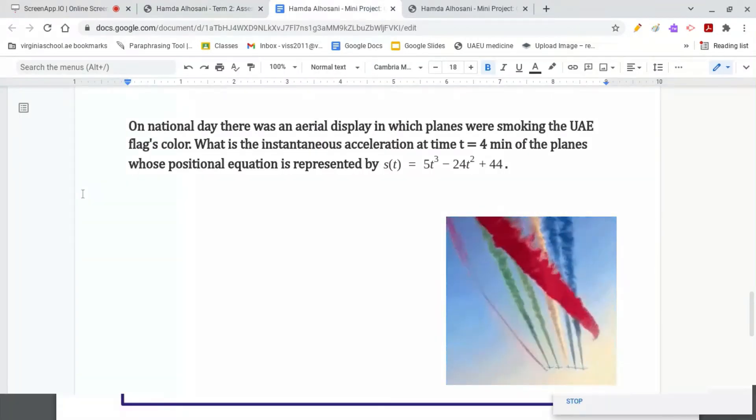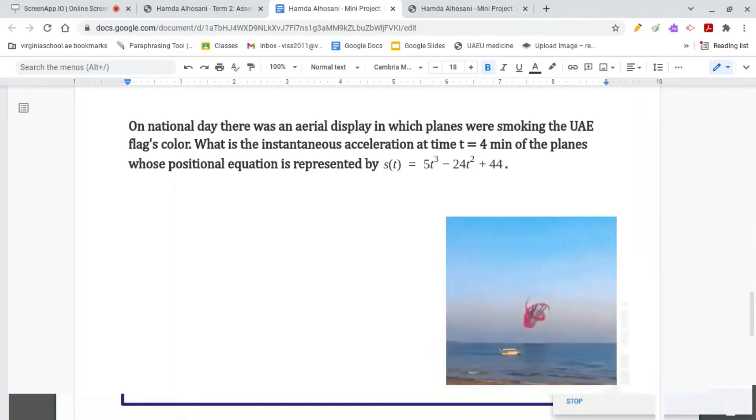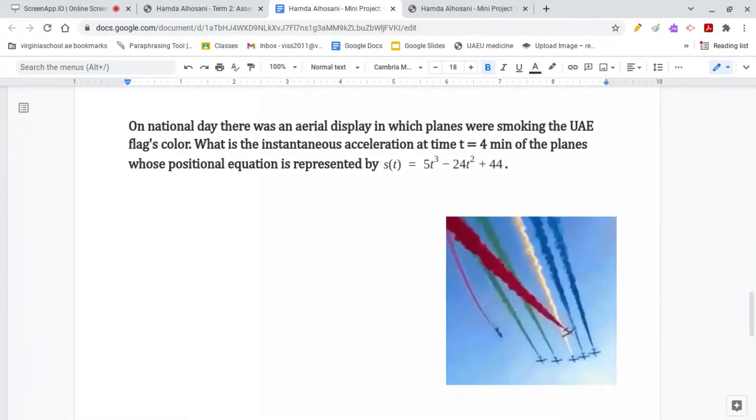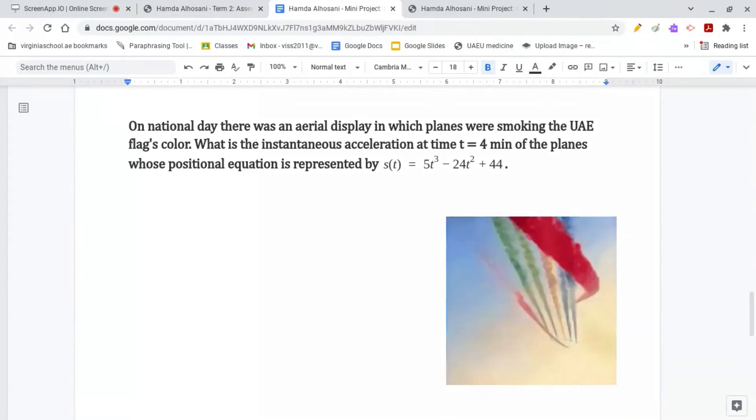On national day, there was an aerial display in which planes were smoking the UAE flag's color. What is the instantaneous acceleration at time t equals 4 minutes of the plane, whose positional equation is represented by s(t) = 5t³ - 24t² + 44?